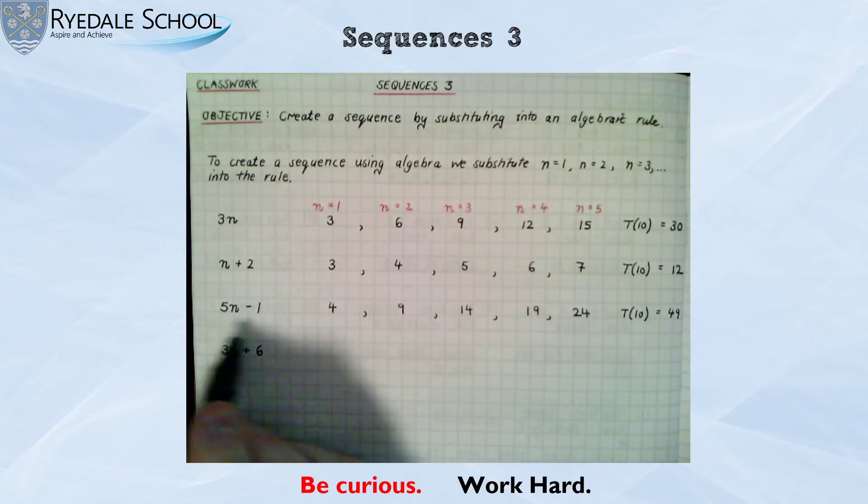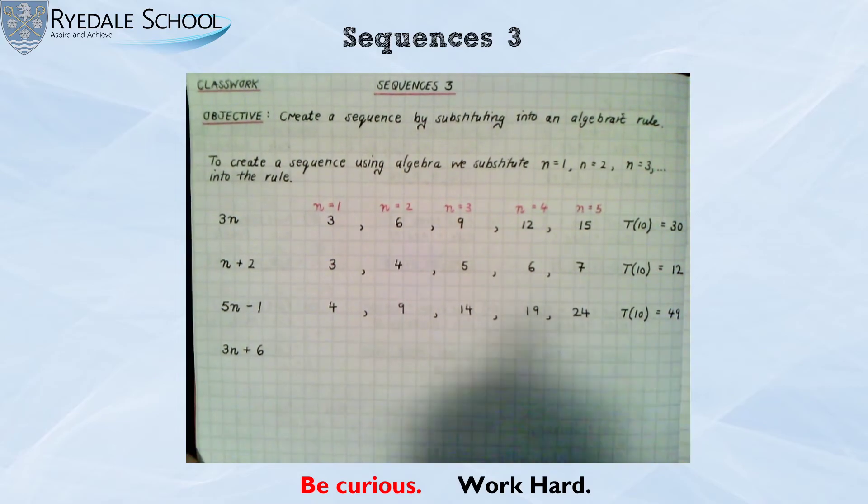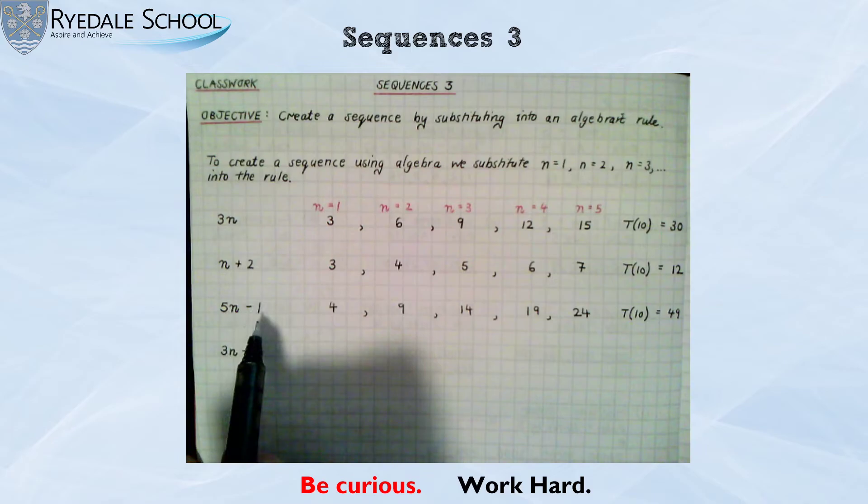So the algebraic rule can get these term numbers without having to write out the whole sequence. If I wanted the 100th term, 5 times 100, 500, take away 1, 499. So it's super quick.